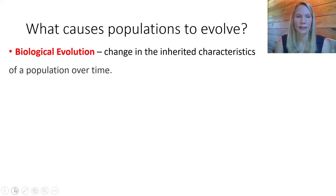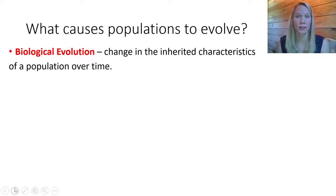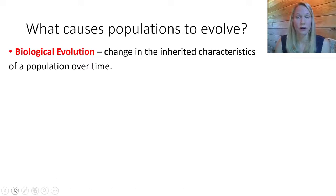We define biological evolution as change that occurs in the inherited characteristics of a population over time. In the last lecture video we learned about Charles Darwin and his famous book On the Origin of Species, and how he developed the theory of evolution by proposing a mechanism for how populations can evolve — his mechanism is called natural selection.